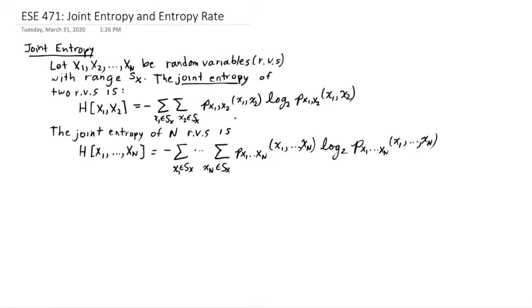These probabilities, of course, add up to one if I sum over both x1 and x2 because they're probability mass functions. So these are probabilities just like the probabilities for a single random variable, except we're considering the value of two random variables at the same time.